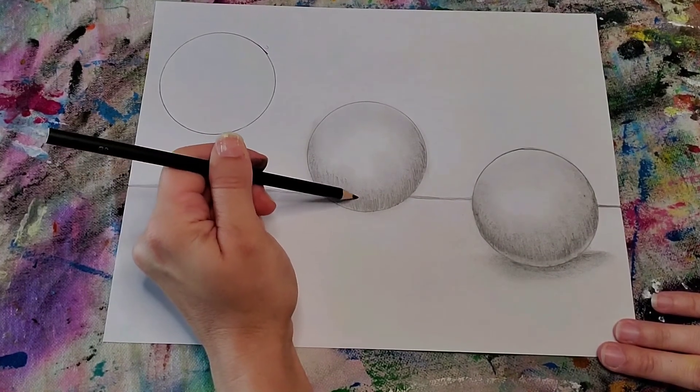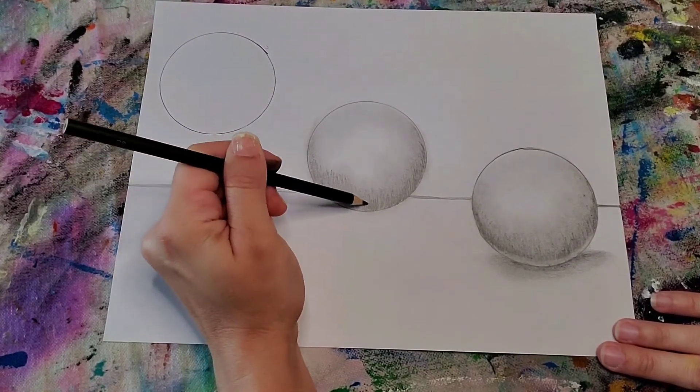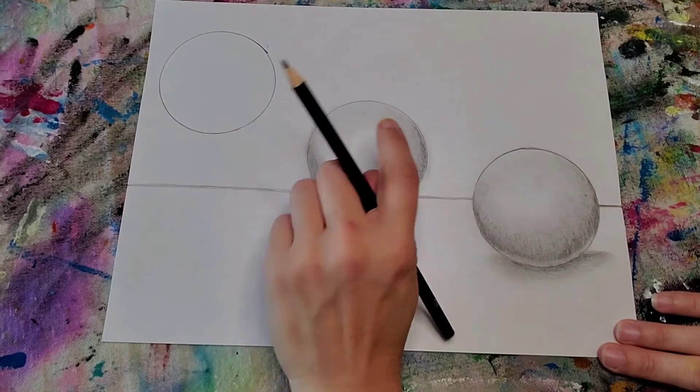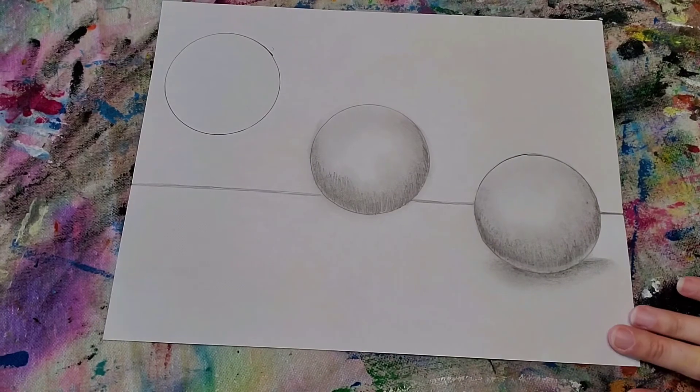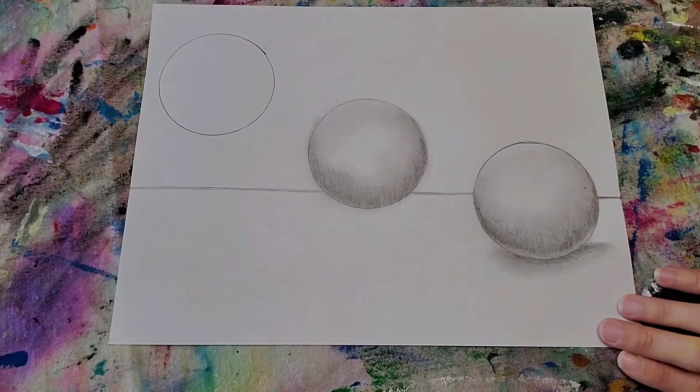Sometimes it helps to take a step back and look at it, see if you want to add any more shadows anywhere. And then once you're happy with it, then we're going to make the shadow again.